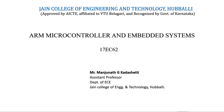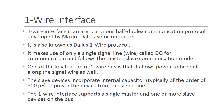Hello everyone. In our microcontroller embedded systems series, the next onboard communication interface is the One-Wire interface. One-Wire is an asynchronous half-duplex communication protocol developed by Maxim Dallas Semiconductor, also known as the Dallas One-Wire protocol. It makes use of only a single signal line called DQ for communication, and follows the master-slave communication model. One key feature of the One-Wire bus is that it allows power to be sent along the signal wire as well.